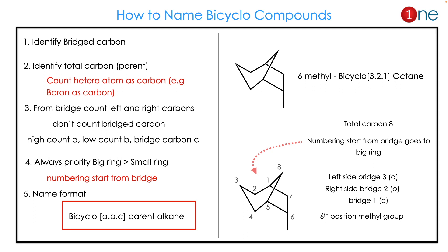How to name a bicyclo compound? It's easy. First, identify the bridged carbon. Then count the total carbons present — that is the parent carbon count. Then count the bigger ring carbons, smaller ring carbons, and bridged carbons, namely a, b, and c. While numbering, the big ring gets a higher count than the small ring. The naming format is bicyclo[a.b.c] with the parent alkane name.